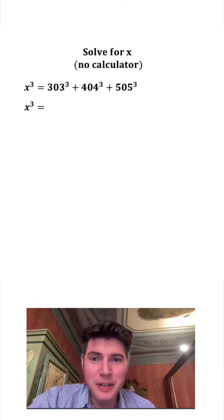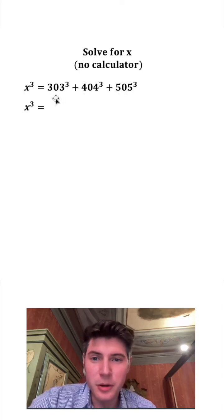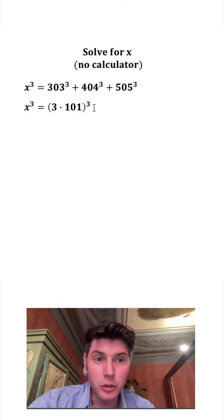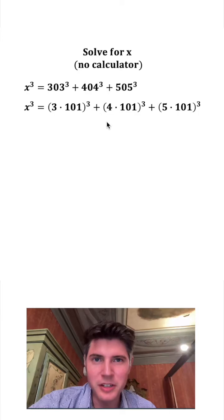On the left hand side we can just copy down the x cubed. I'm noticing all of these are divisible by 101, so I'm going to rewrite this as 3 times 101 cubed plus 4 times 101 cubed plus 5 times 101 cubed.